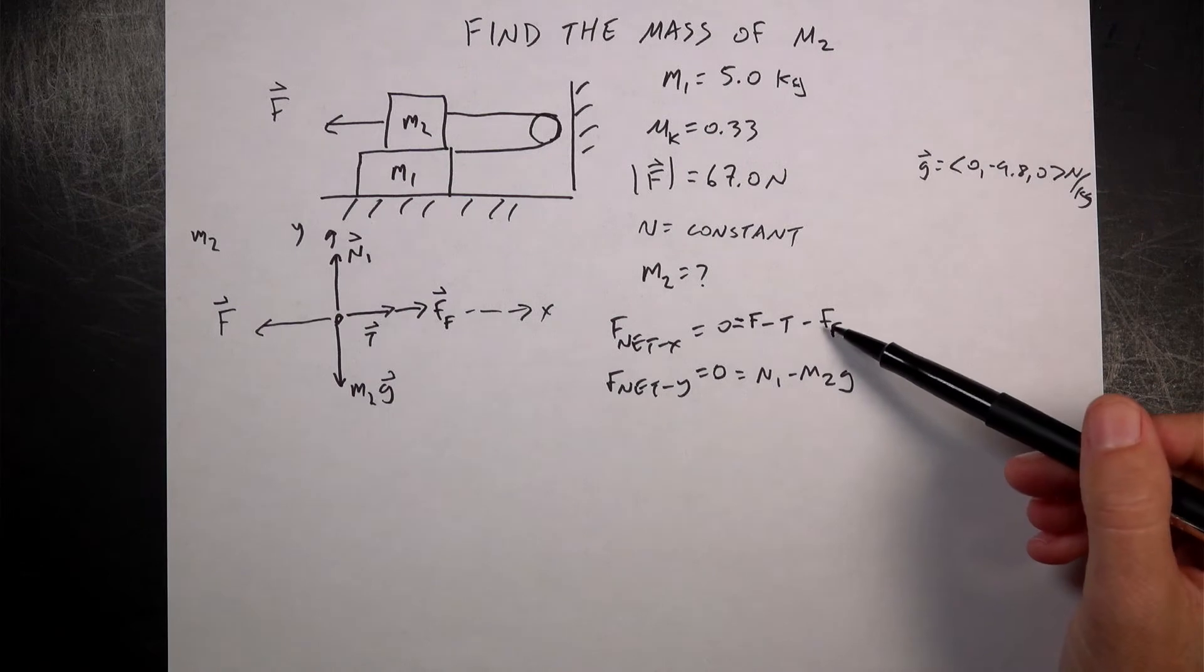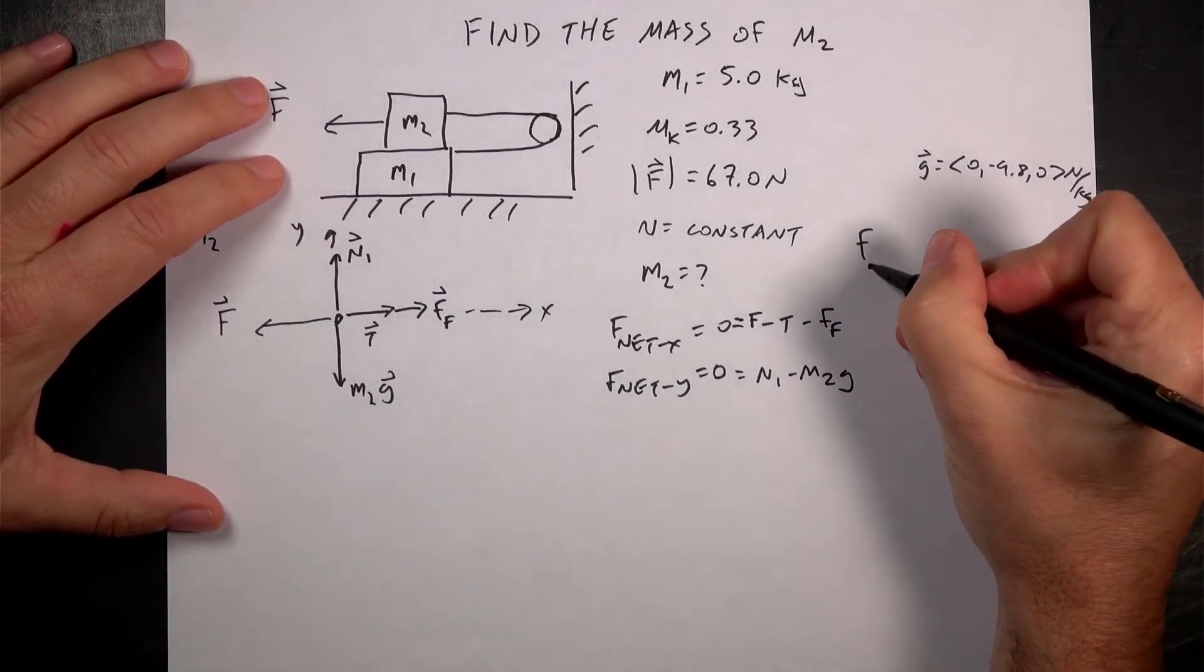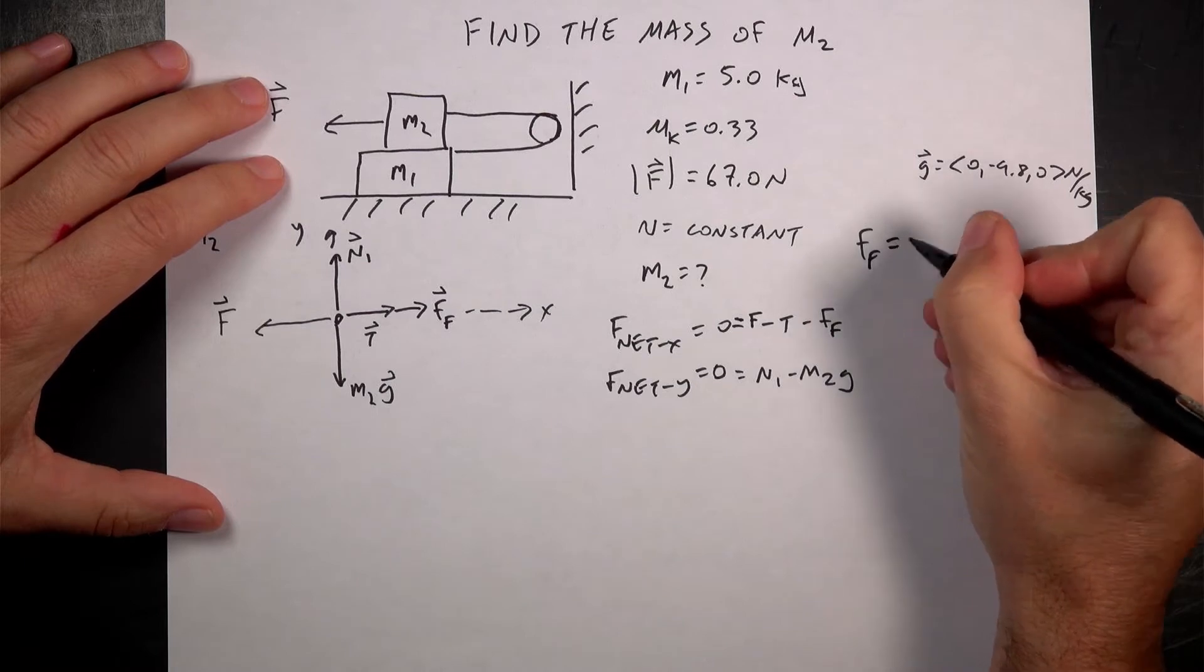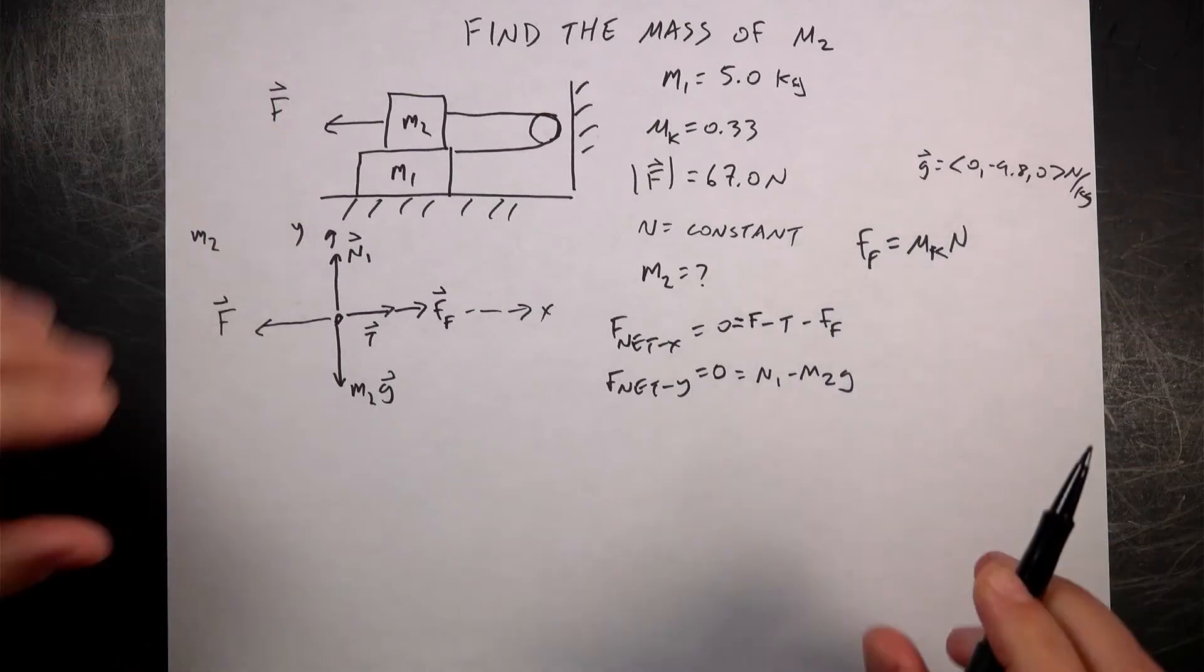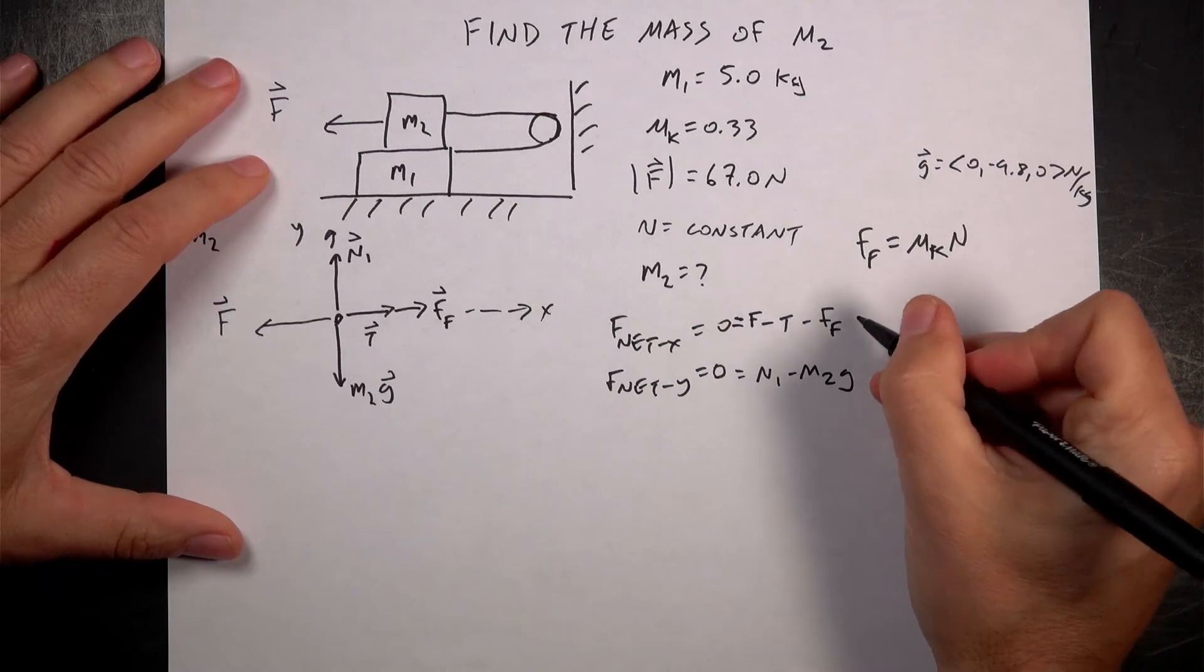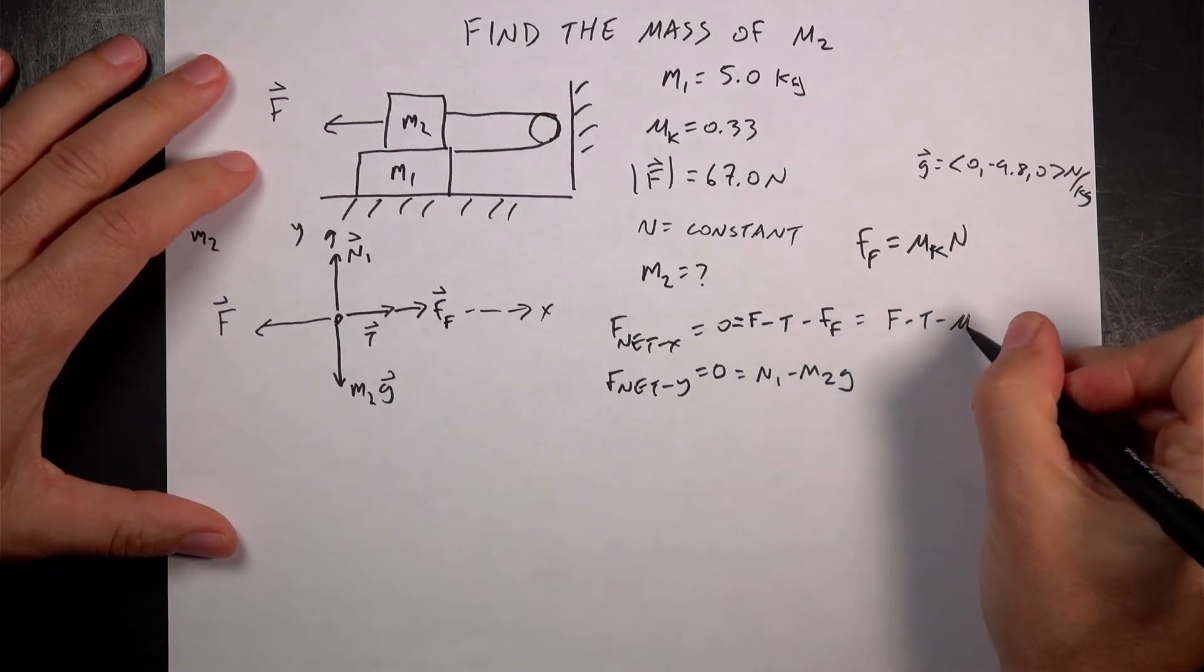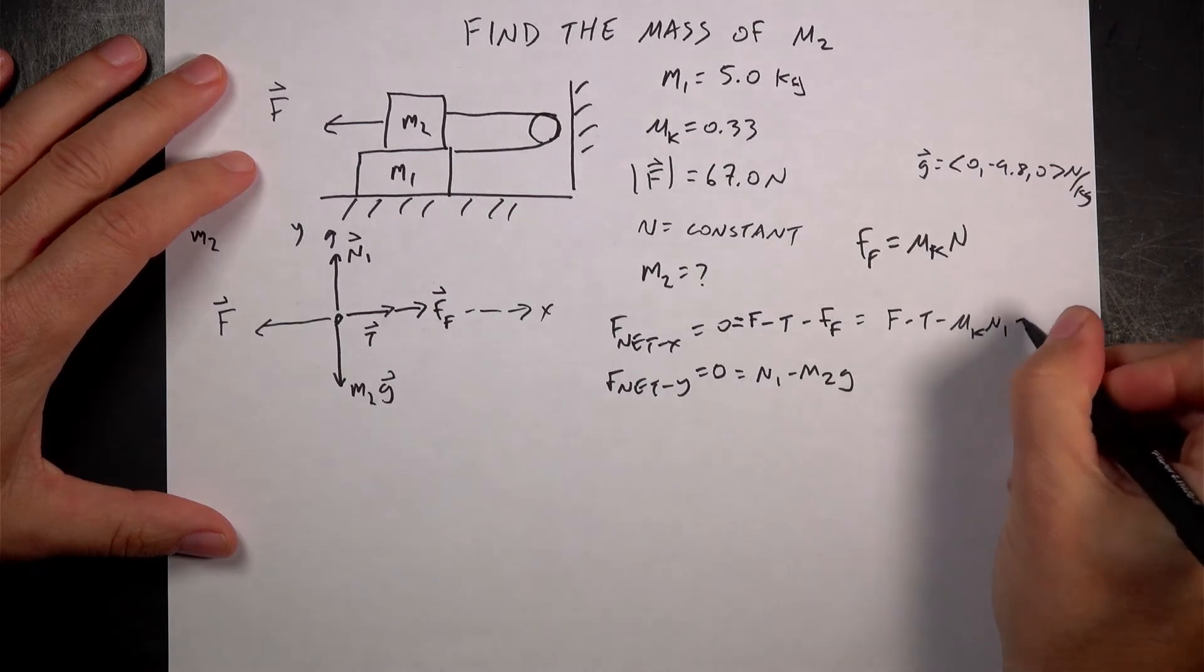So I know F. I don't know the friction force. Now one of the things I do know is the model for friction. This says the magnitude of the friction force is equal to mu K times N. It's the normal force times the coefficient of friction. So in this case, that would be this N1. So I'm going to go ahead and write this as F minus T minus mu K N1 equals zero.